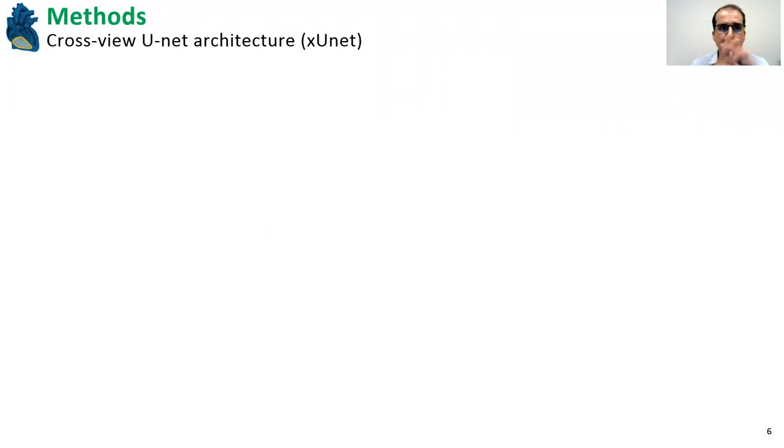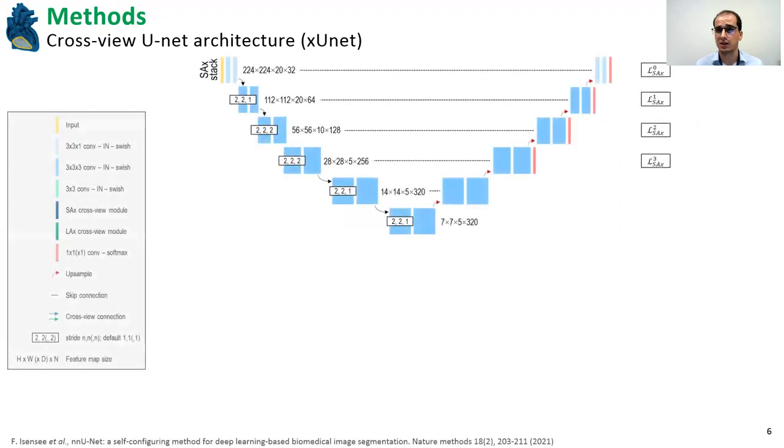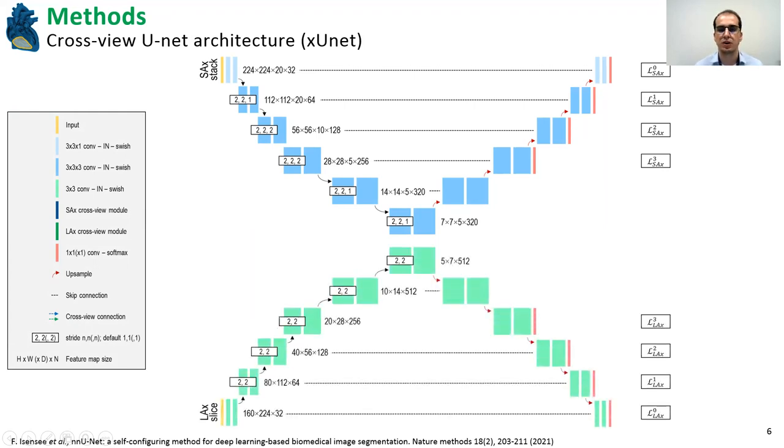So now, with respect to the architecture, I propose this cross-view U-Net architecture, XUnet, that tries to simultaneously segment both the images. And so this architecture is based on the 3D and 2D U-Net configurations proposed by Fabian in the nnU-Net work. So here we have an example of the 3D U-Net for the segmentation of the short axis stack, with differences being the input size of the network and use of the swish activation rather than the leaky ReLU activation. It's a six-level U-Net with four-level deep supervision. A similar network could be thought of for the long axis segmentation.